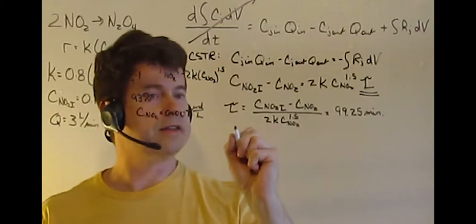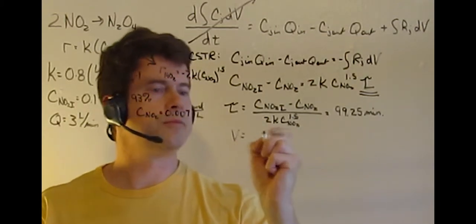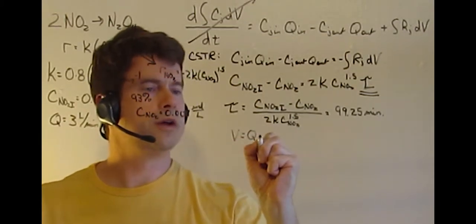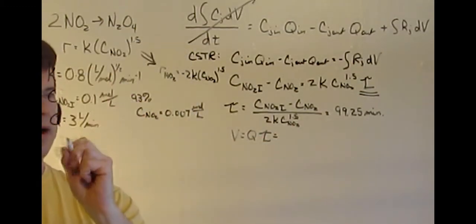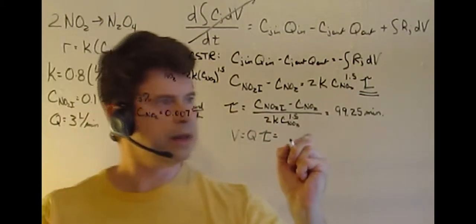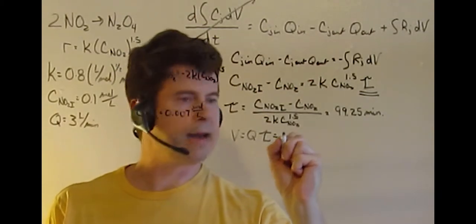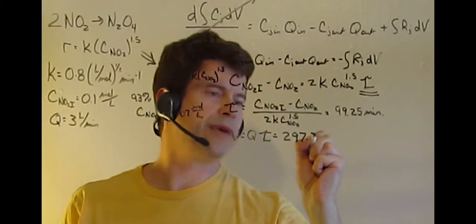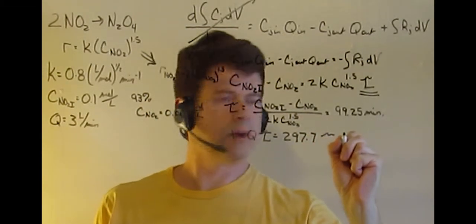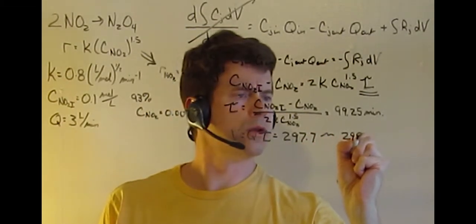Finally, solving for volume, that's simply Q times tau. Since our value of Q is 3 liters per minute, we multiply that and we get 297.7, or about 298 liters.